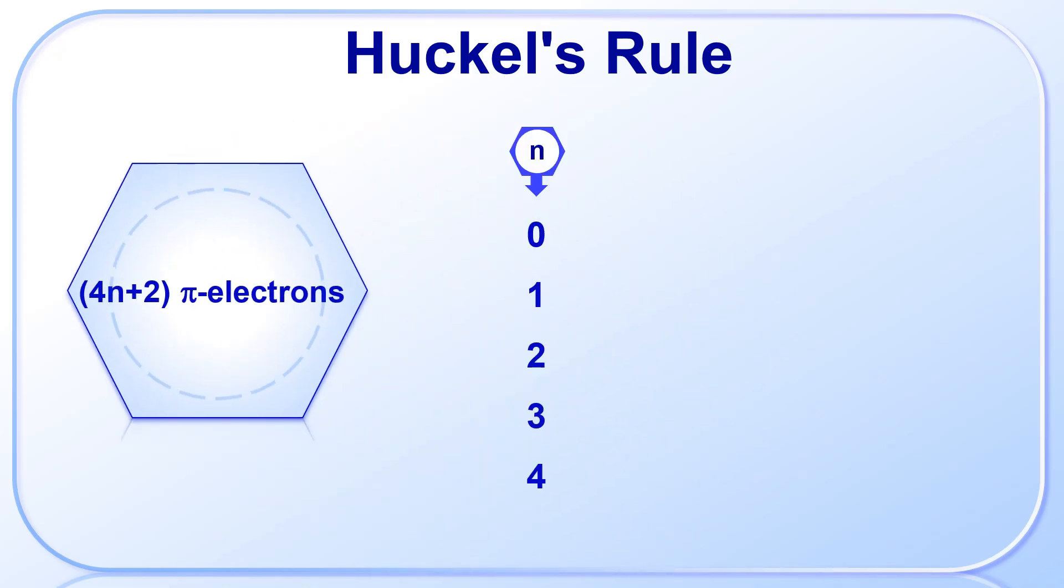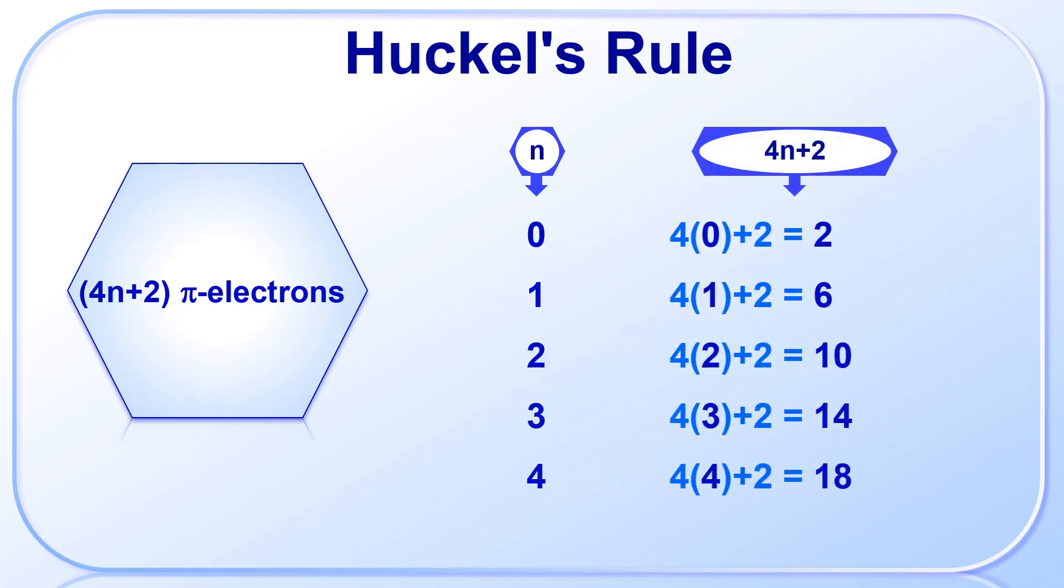Here, n can be any whole number including 0. That means n equals 0, 1, 2, 3, 4, and so on. The expression 4n+2 is referred to as Hückel's number.